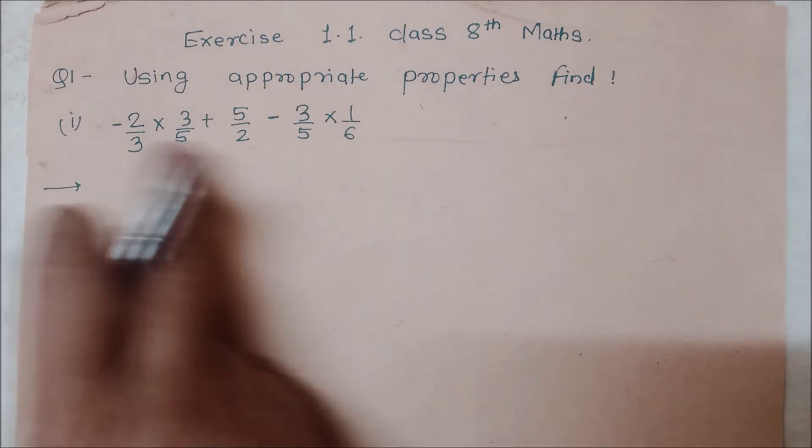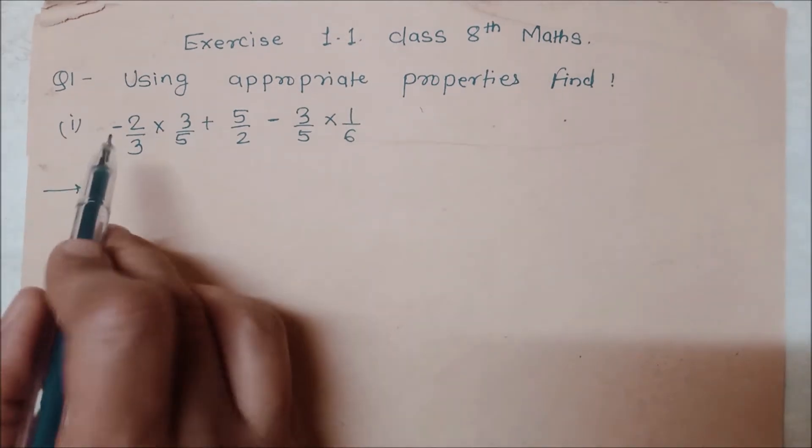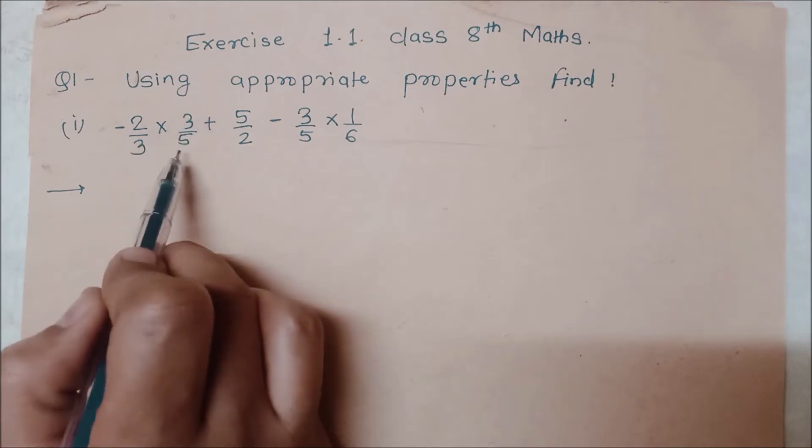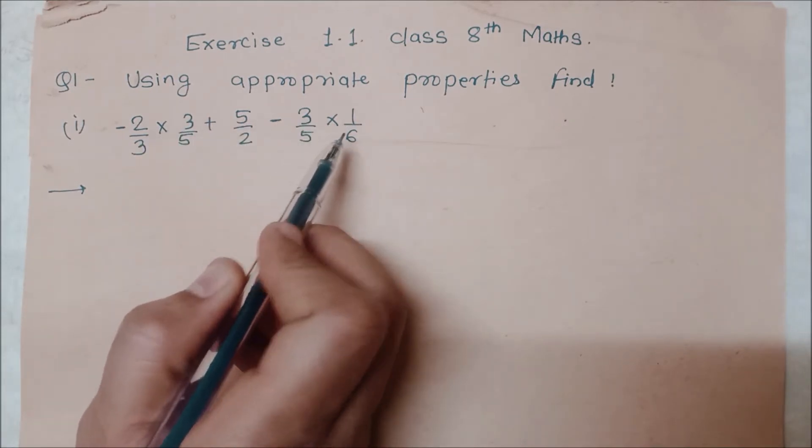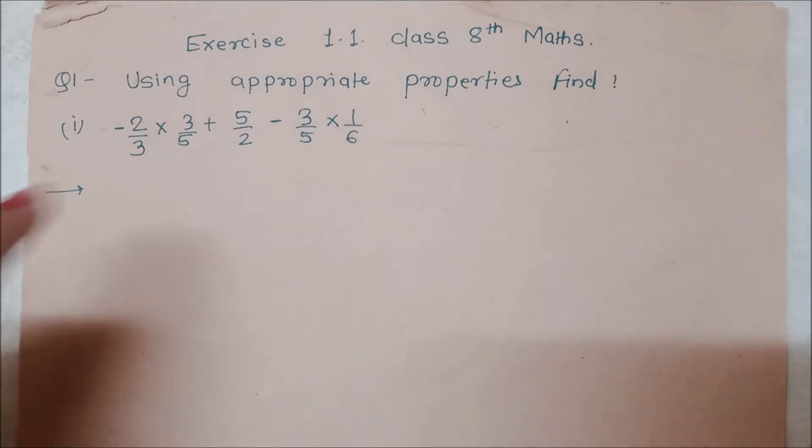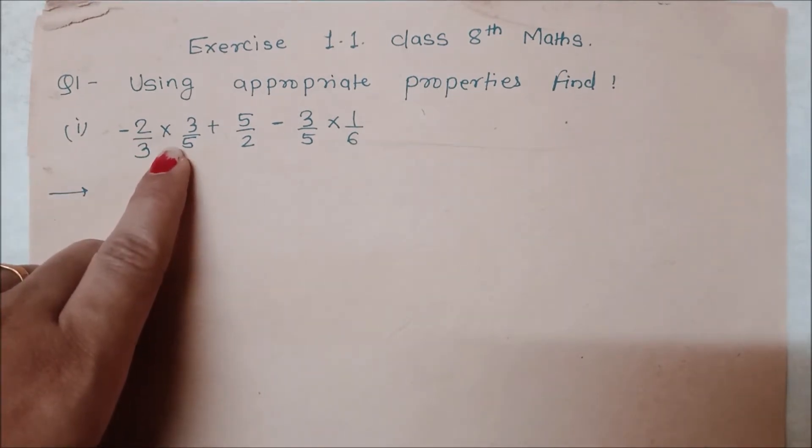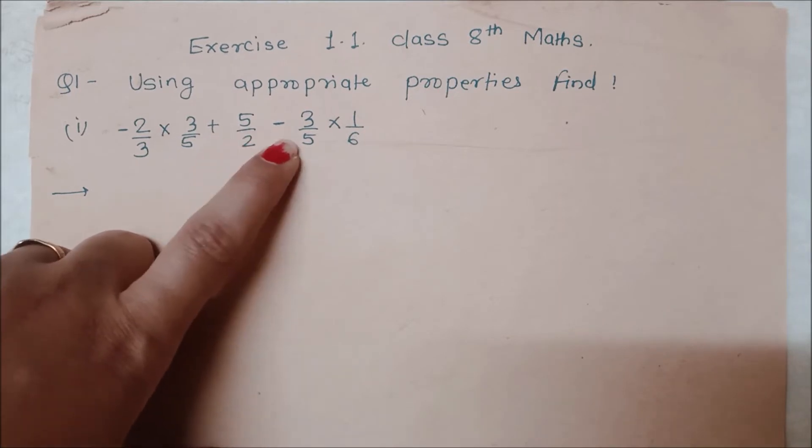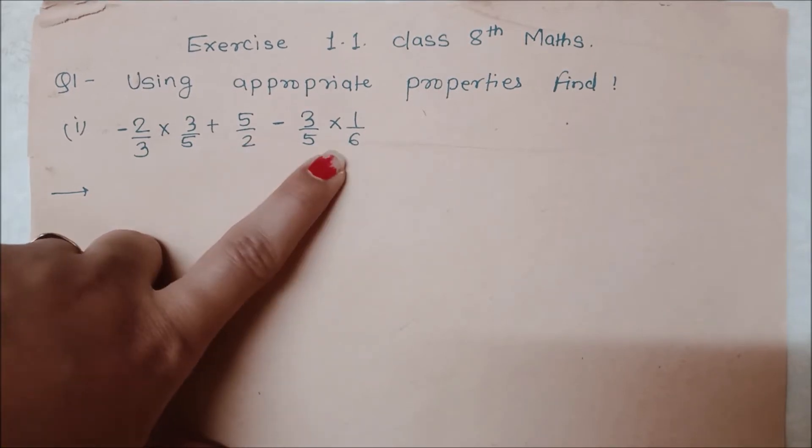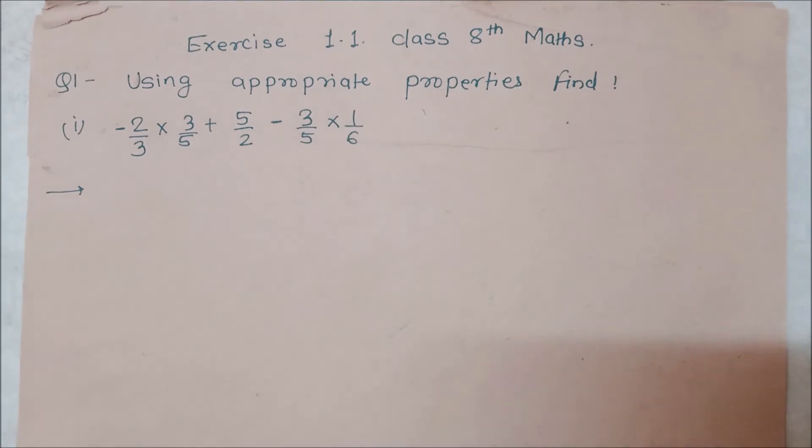Let's start. Here we have an equation: minus 2 by 3 into 3 by 5 plus 5 by 2 minus 3 by 5 into 1 by 6. Now if you want to do all these things, you want to do first multiplication, then the answer will come. But we have to use the appropriate properties to solve it.